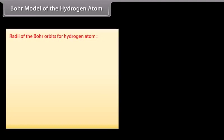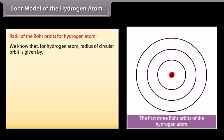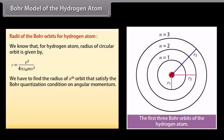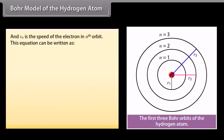Radii of the Bohr orbits of hydrogen atom. We know that for hydrogen atom, radius of circular orbit is given by e²/(4πε₀mv²). We have to find the radius of nth orbit that satisfies the Bohr quantization condition on angular momentum. L_n is equal to product of m, v_n, and r_n, which equals nh/2π, where n = 1, 2, 3, and so on, and v_n is the speed of the electron in nth orbit. This equation can be written as v_n = nh/(2πmr_n).